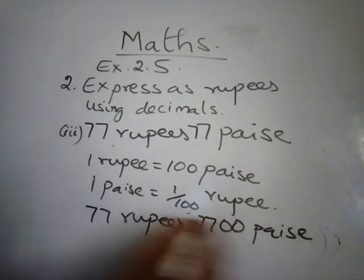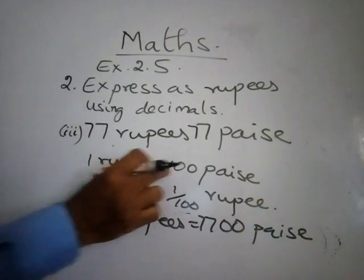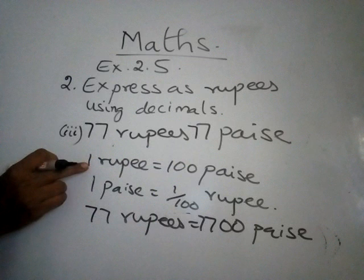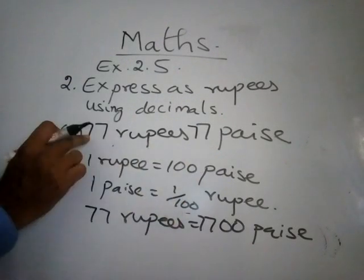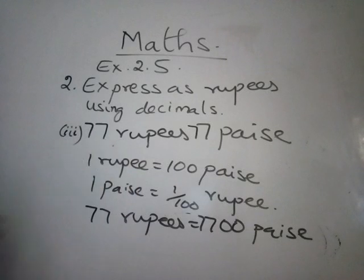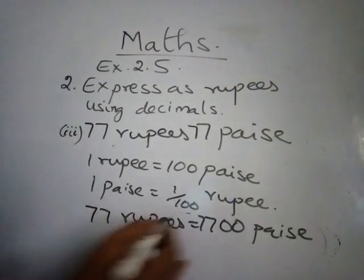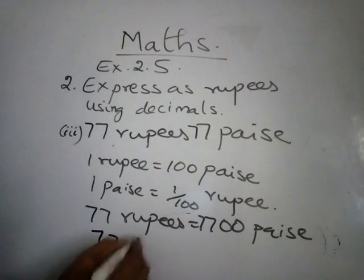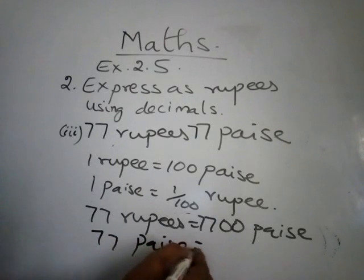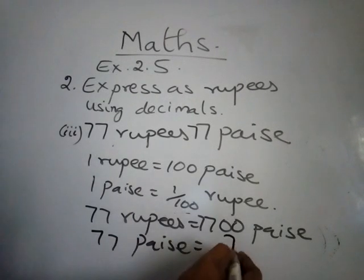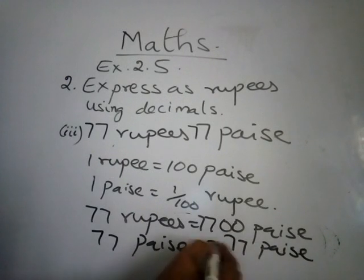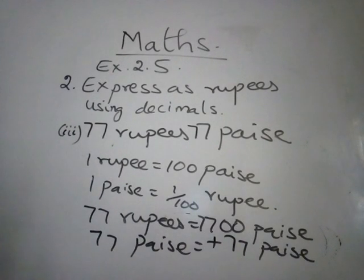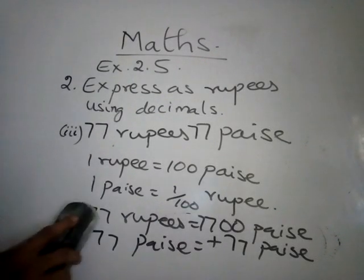Because any rupee, just zero will be added at the end. 1 rupee means 100, 2 rupee means 200, 7 rupees means 700, 77 rupees means just two zeros will be suffixed at the end. Next, 77 paise should be added to this. 77 paise. Once I add 77 paise to this, 7,700 plus 77, this total together is 7,777.